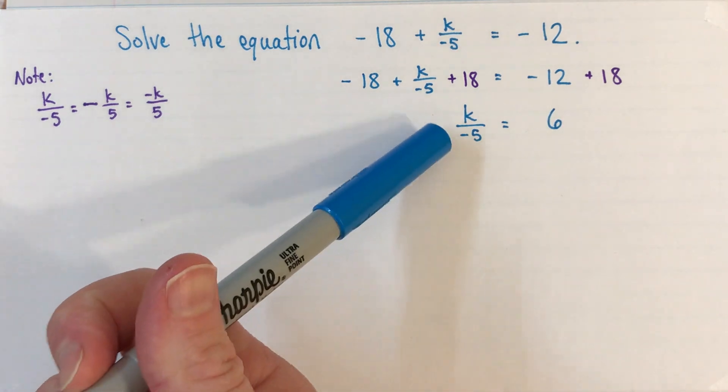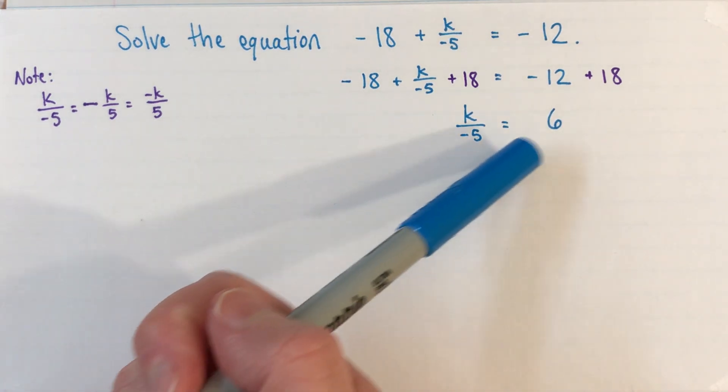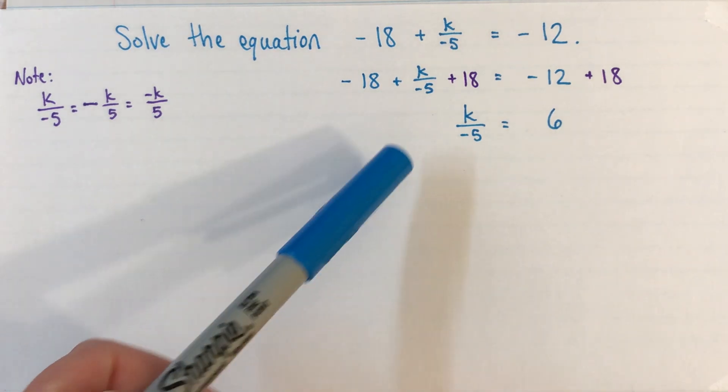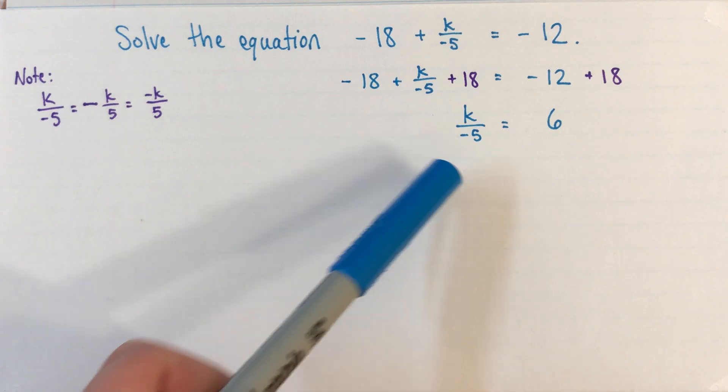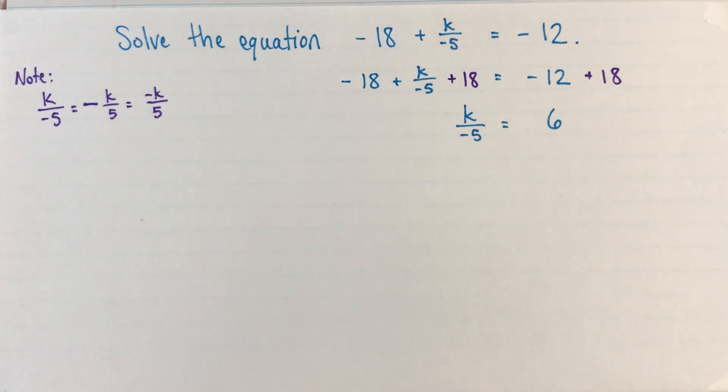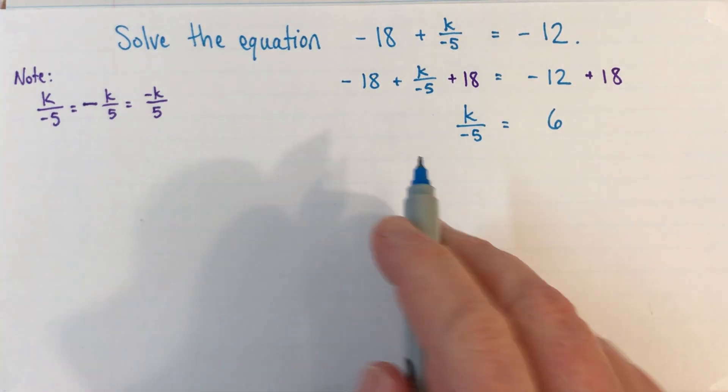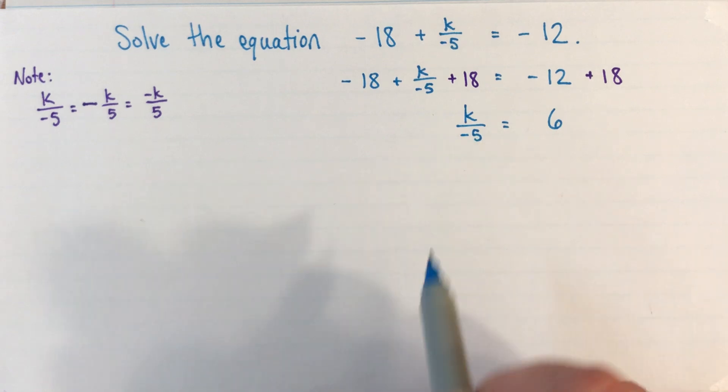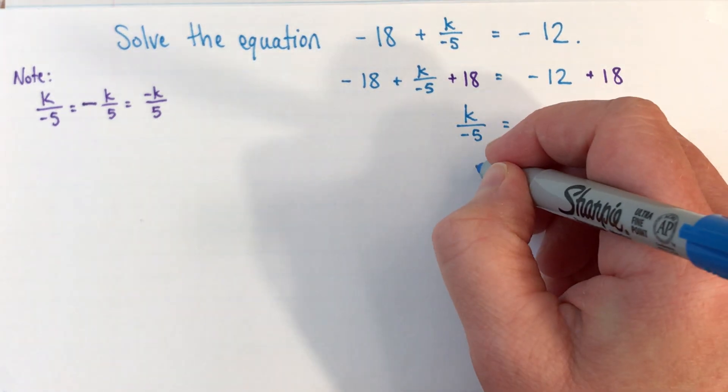Now, at this point, we're down to sort of a one-step equation where we're divided by -5. I've made another video which I'll put a little link to on the screen right now, where I showed two different ways of doing it. For right now, I'm just going to show the way that's a bit quicker. So what I'm going to do, we have k divided by -5. So to undo that divided by -5, I'm just going to multiply both sides by -5.